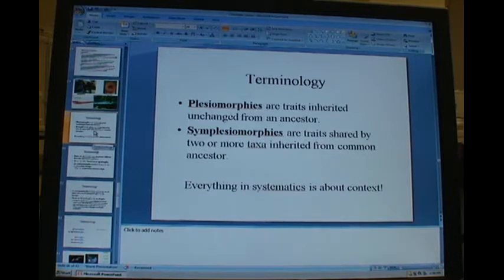First things first, traits. Traits are what we use to define relationships, and these traits can be either ancient or derived. If they're ancient, they're called plesiomorphies. If there are multiple species that share that ancient trait, that trait is called a symplesiomorphy.